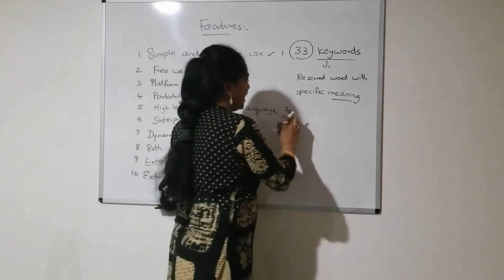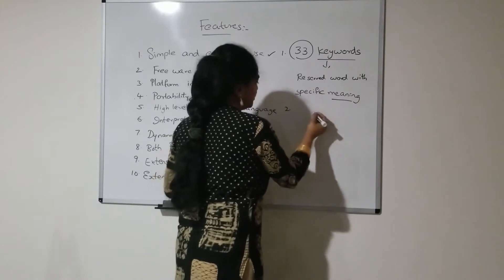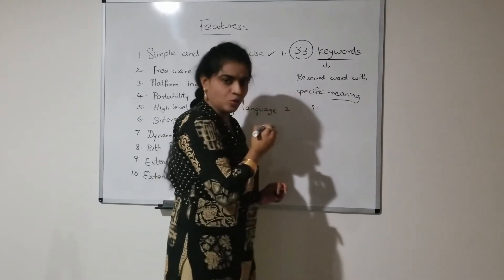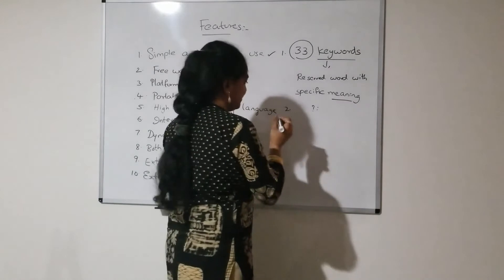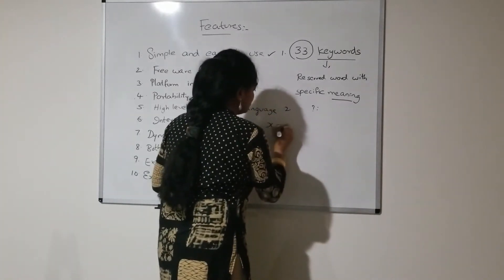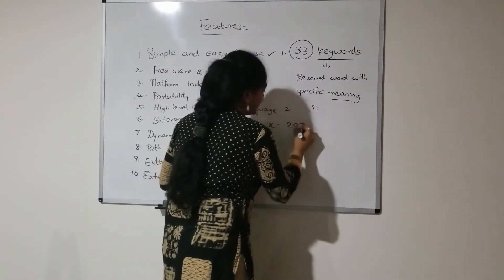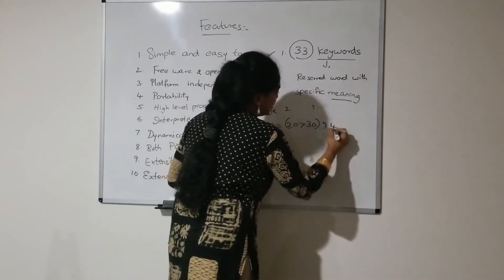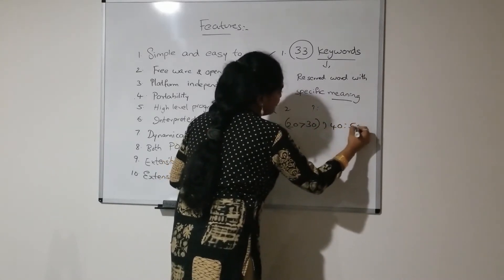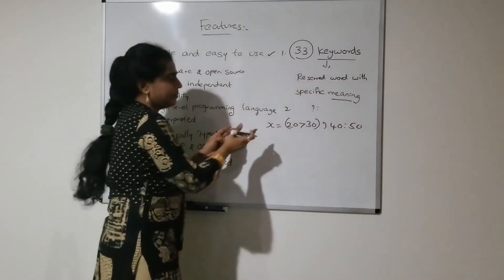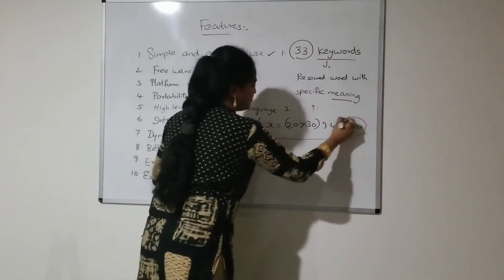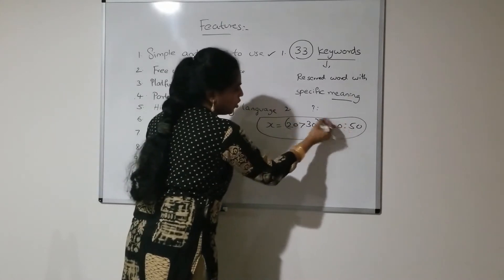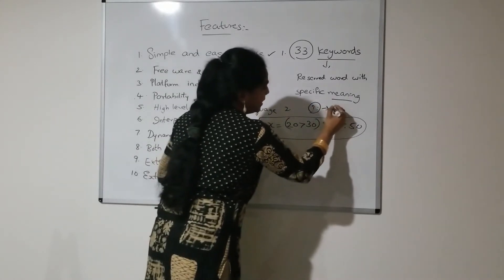Consider a C language code using the ternary operator. I am writing a code in C language: x is equal to 20 greater than 30, question mark 40, colon 50. This is called a ternary operator.